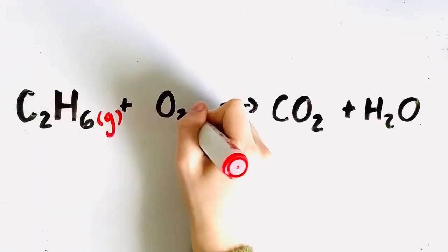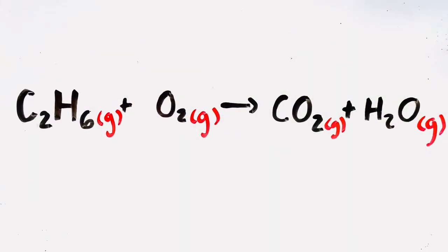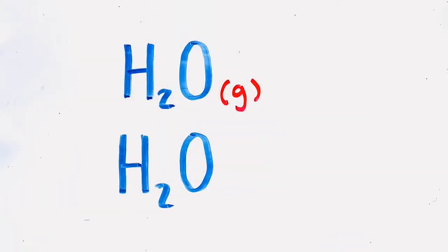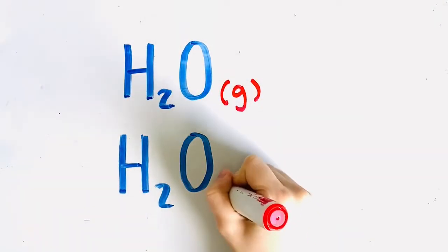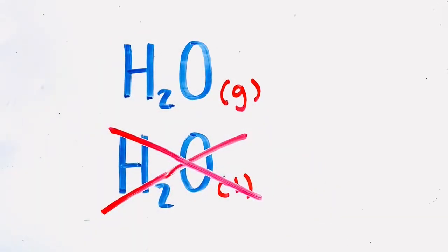For example, ethane gas plus oxygen yields carbon dioxide plus water vapor. A key thing to remember is that when water is produced during a combustion reaction, it is produced in gas form. It becomes water vapor. It is not a liquid.